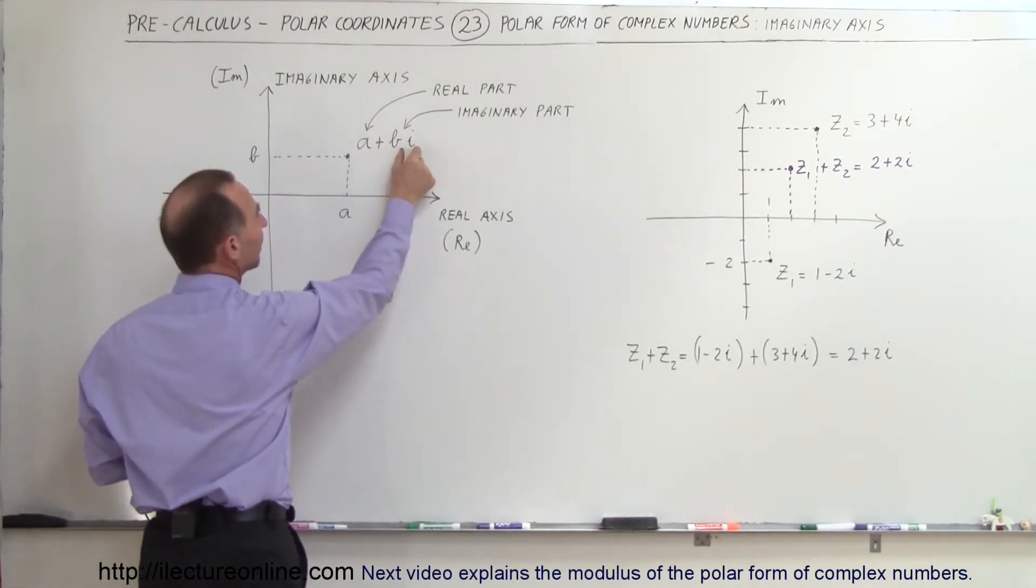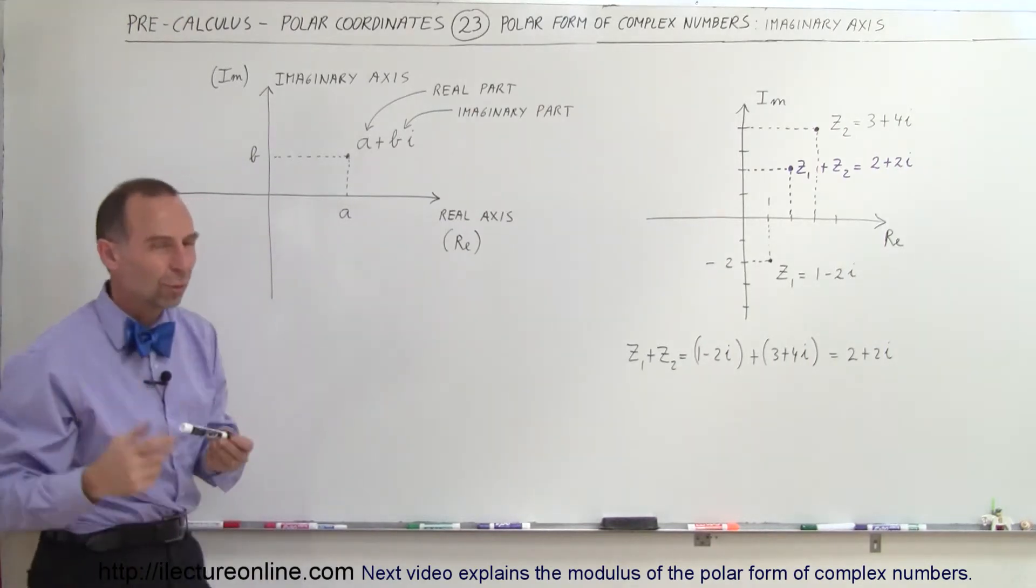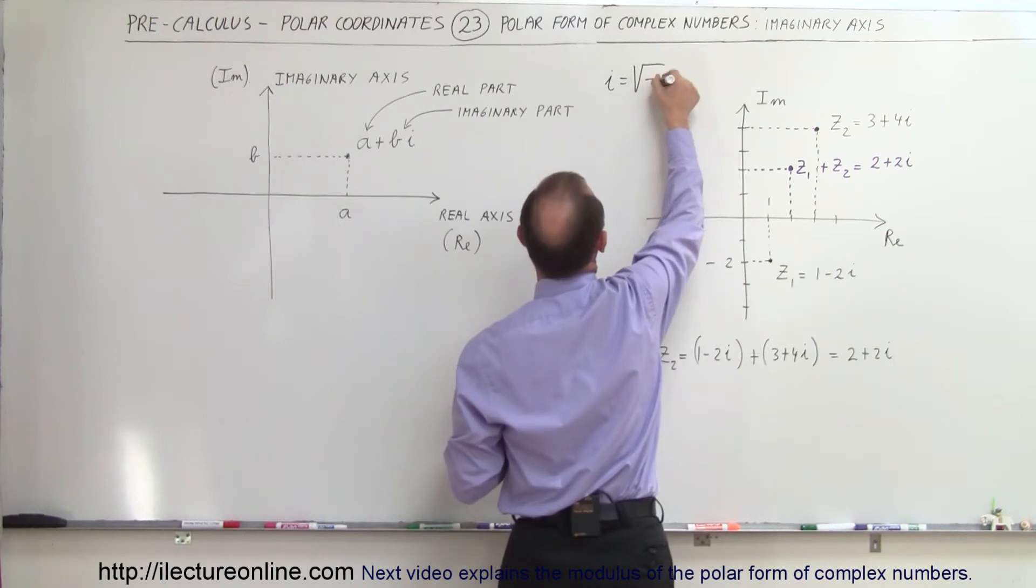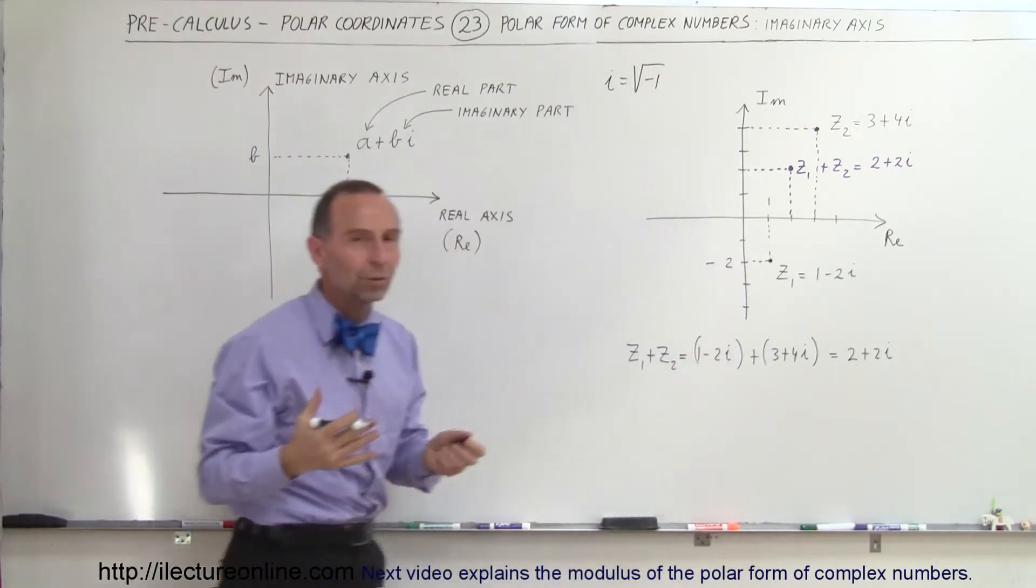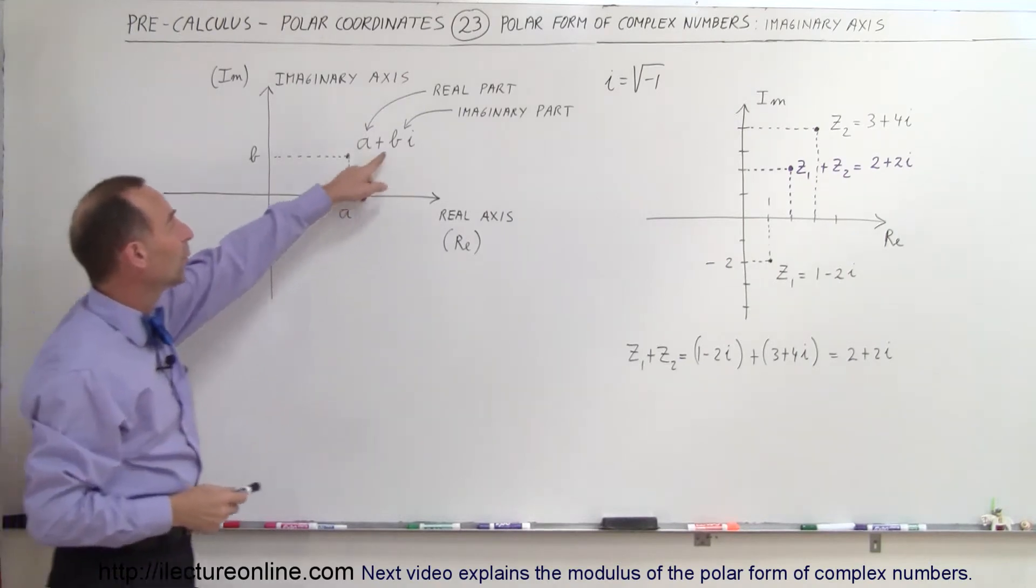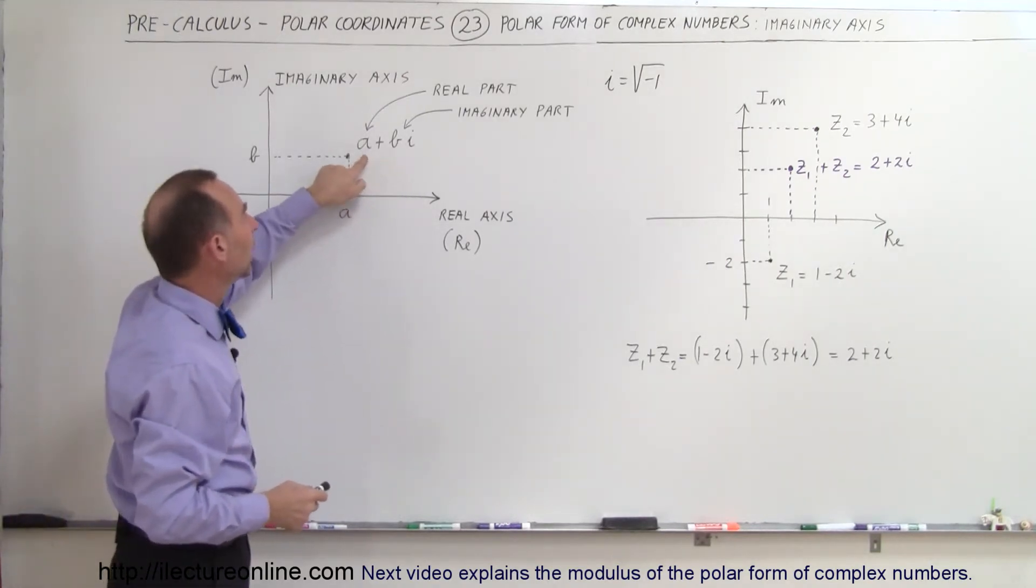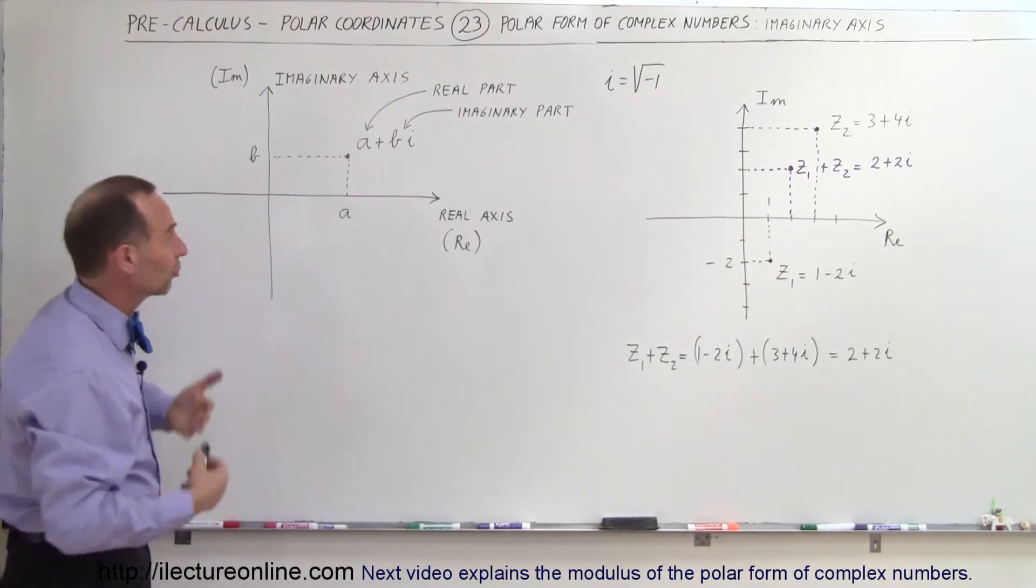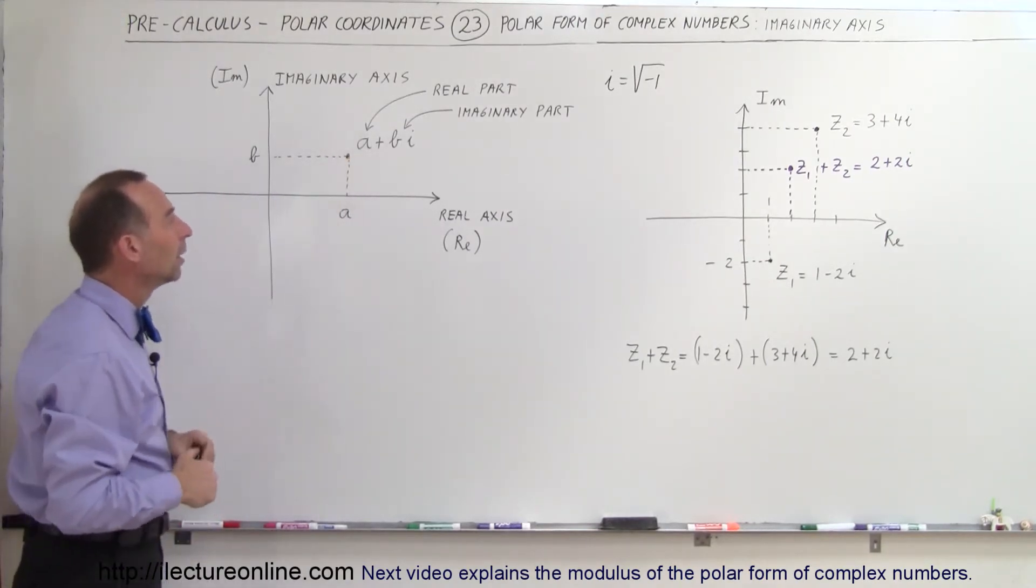The imaginary part is a number multiplied times i, where i is the square root of negative 1. Since i equals the square root of negative 1, that is not a real number. You don't have such a thing as a square root of negative 1. This is what we call the imaginary part of the number, and this is called the real part. The real part would be like an integer, a fraction, or a decimal.